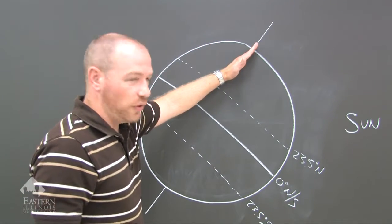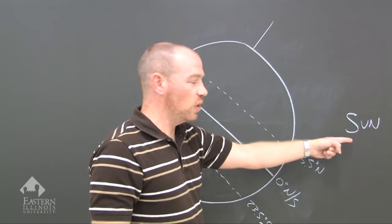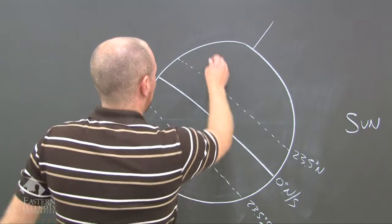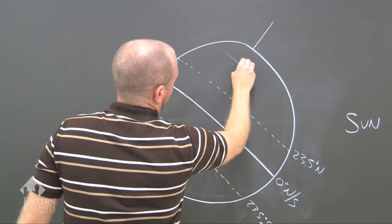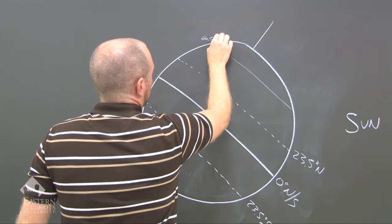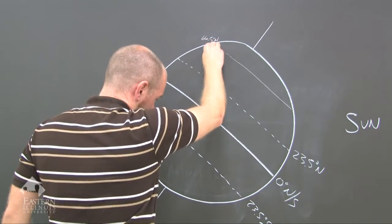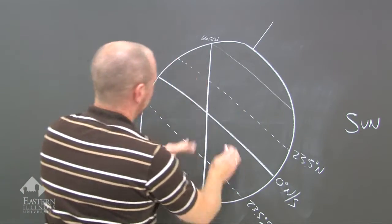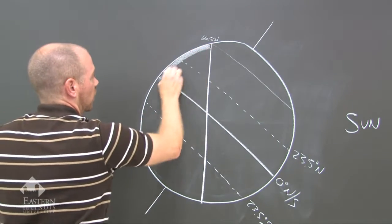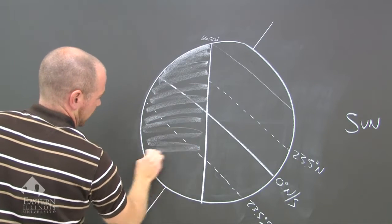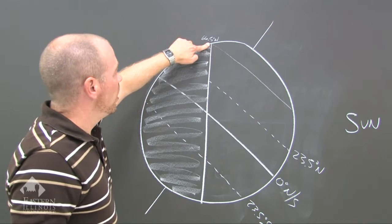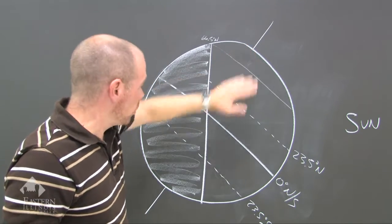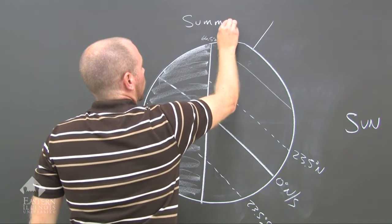So we've got a tilt here. The north pole — the northern hemisphere — is pointed toward the Sun. This is the point where we have 24 hours of daylight. This light line here is 66.5 degrees north, and I want to indicate that because that is the extent of the shadow. Here's the sunlight; back here is the shadow created by the Earth. The north pole is getting 24 hours of daylight here, and this is our summer solstice.